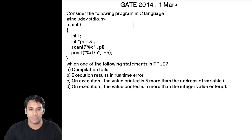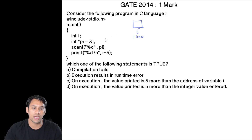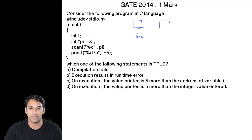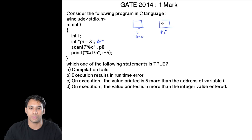Let us suppose this is the variable i and the address of this variable i is 1000. They have stored the address of this variable i into pi, and pi is a pointer. So pi will store 1000.